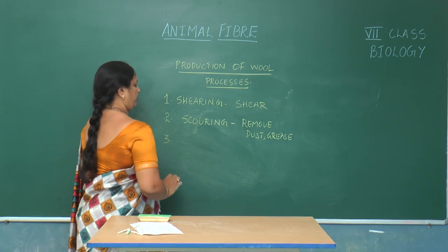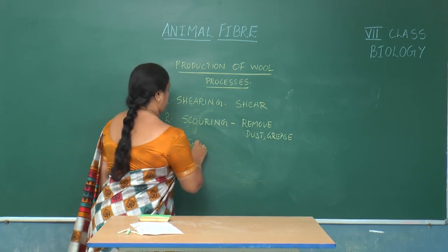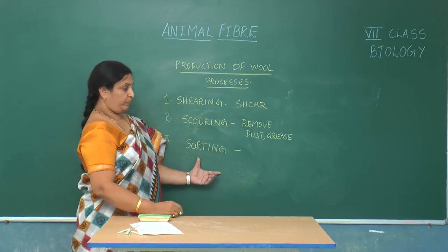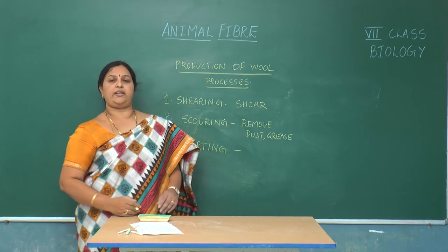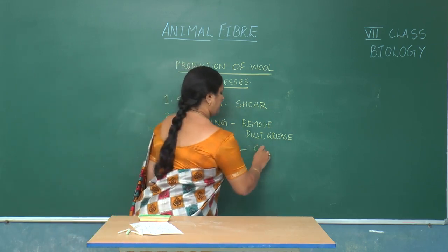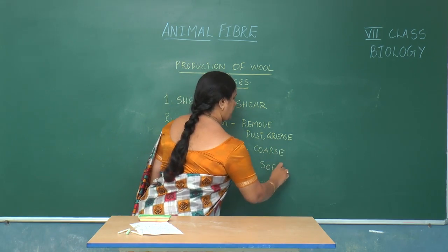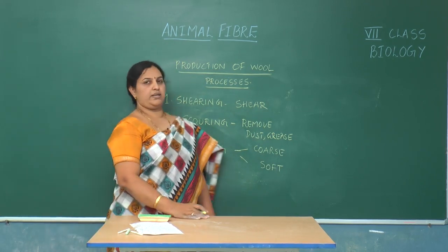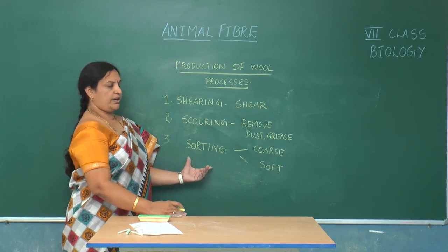In the third step, that is sorting, the hair is divided into two types — they are segregated into two separate piles. One pile contains the coarse hair and the other contains the soft hair.